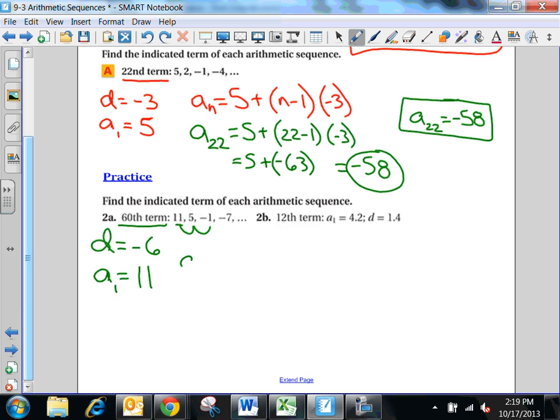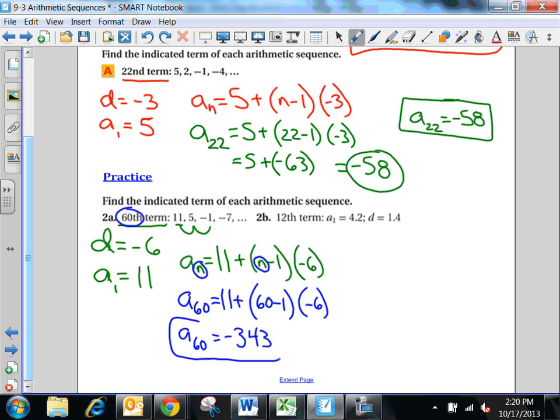So my explicit formula is an equals 11 plus n minus 1 times negative 6. And then all I do to find out the whatever term is I plug in for n. Whatever I'm looking for. I'm looking for the 60th term. So I'll say a 60 equals 11 plus 60 minus 1 times negative 6. And then I work that out. 59 times negative 6 plus 11 is negative 343. So I get a sub 60 is negative 343.